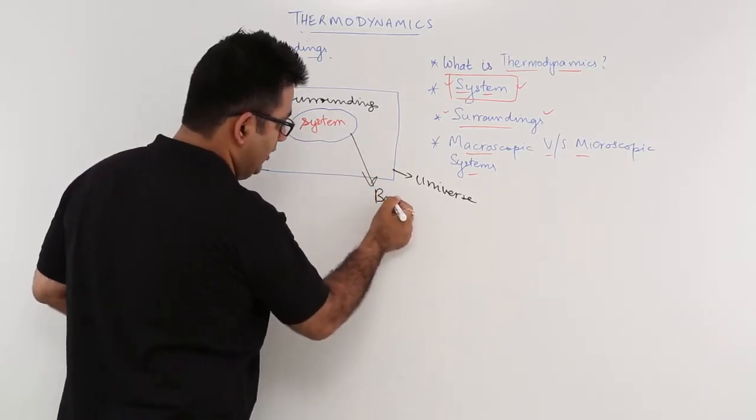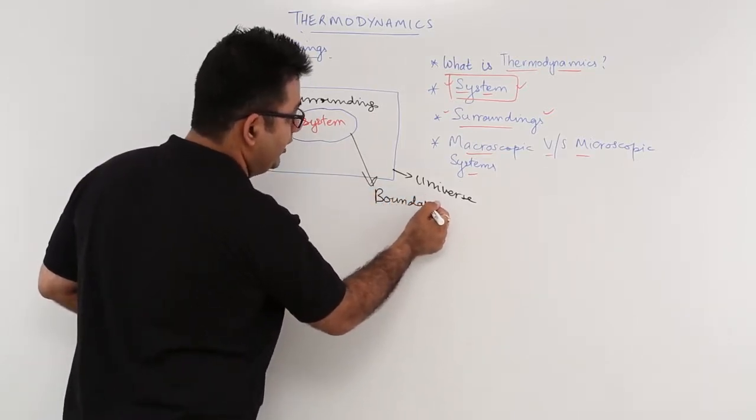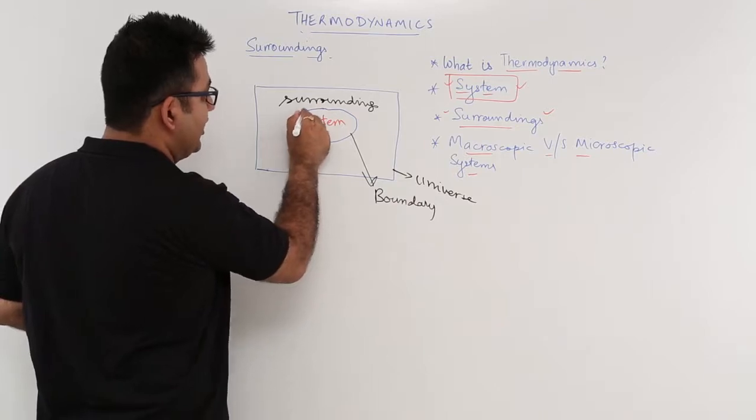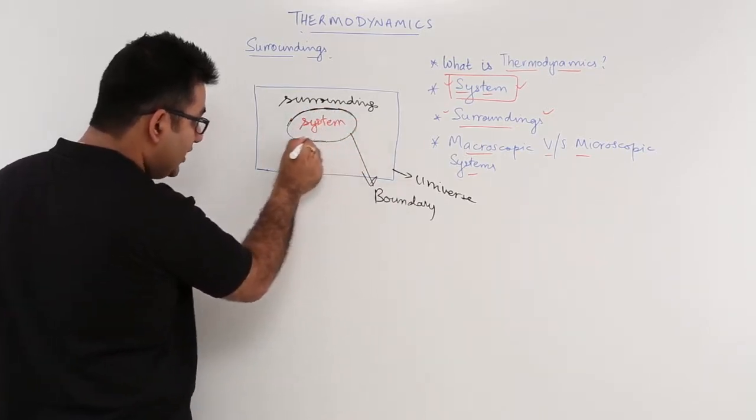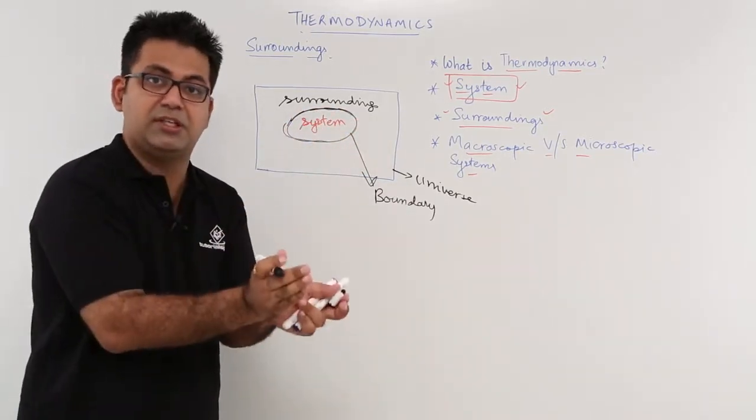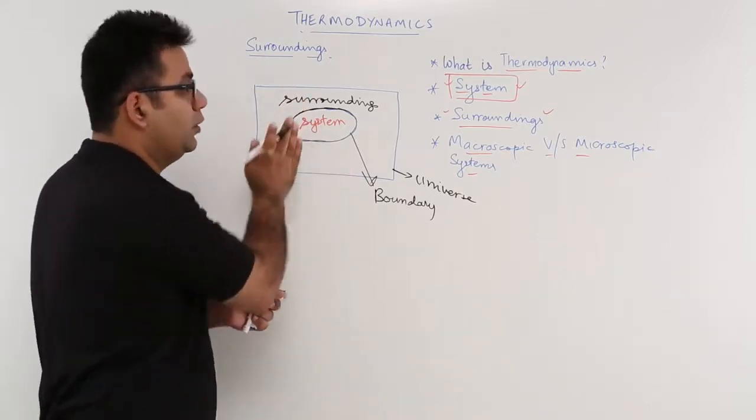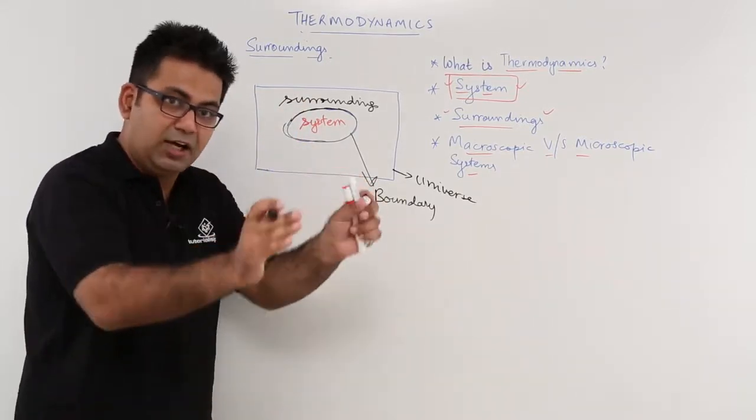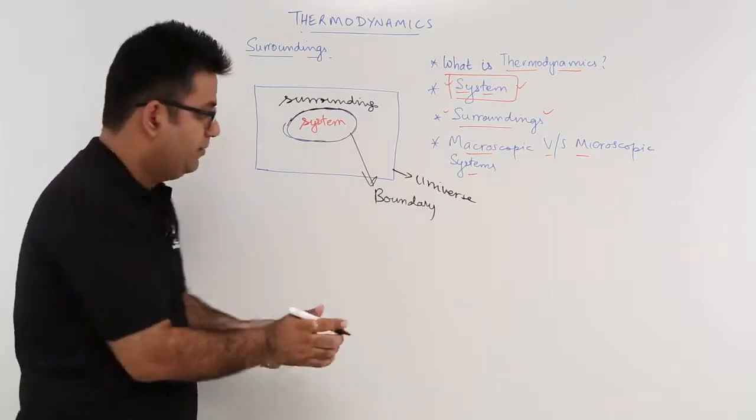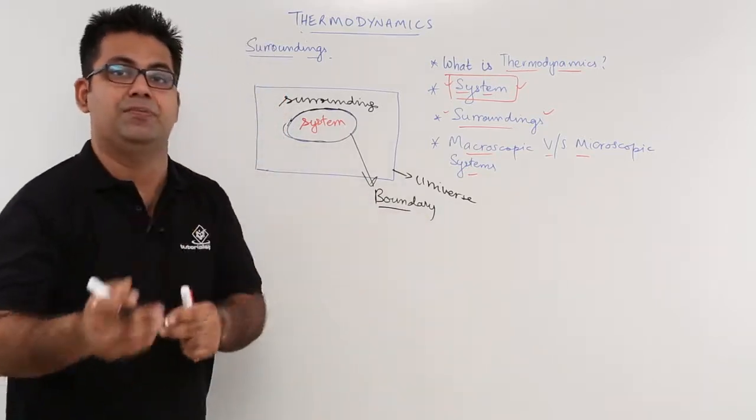This becomes the system boundary because you can see that this arbitrary shape which is enclosing the system is separating the system from the surroundings. That enclosure becomes the boundary of the system.